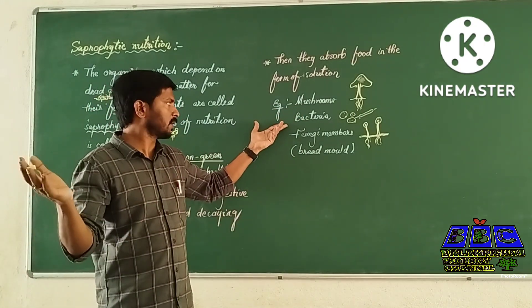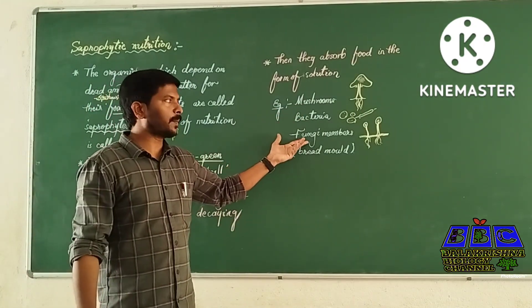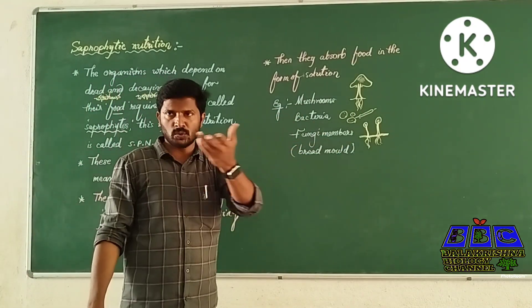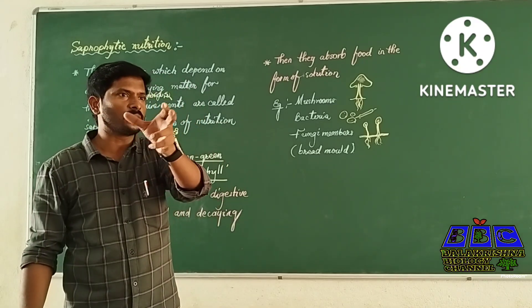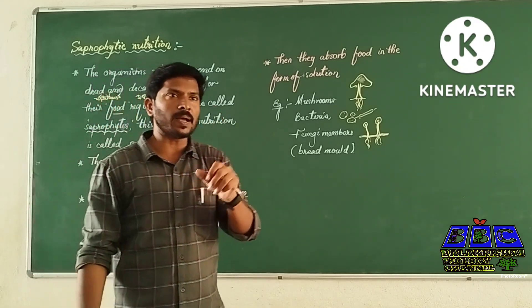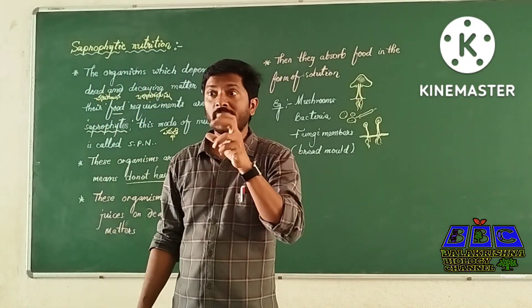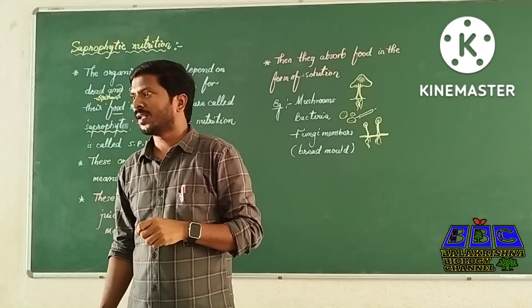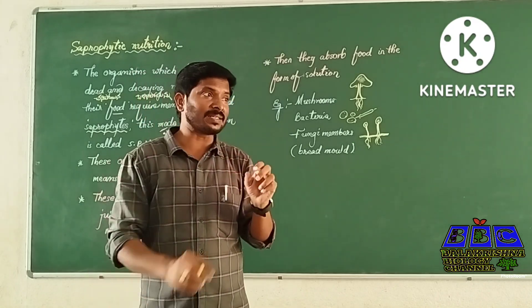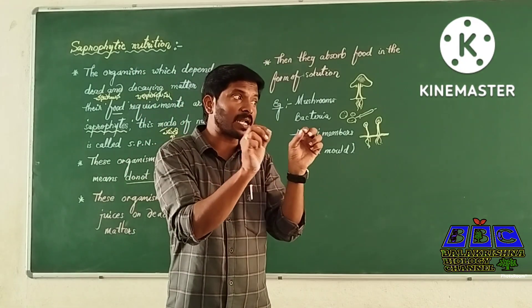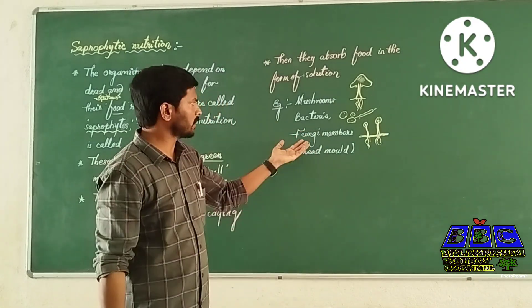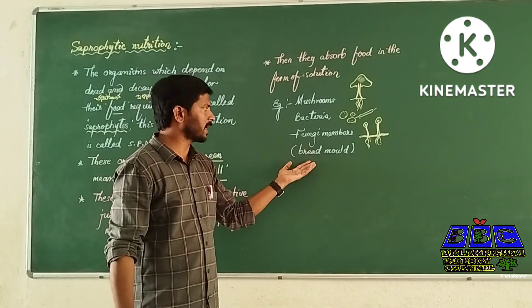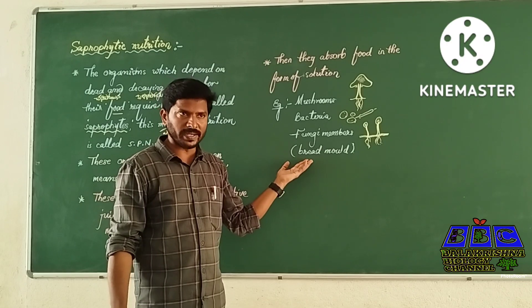Bacteria and fungi — such as bread molds — are examples. We can use fungi which grow on foods like meat, jam, bread, oregano, and sweets. All these organisms do not have chlorophyll.